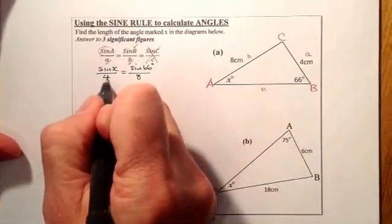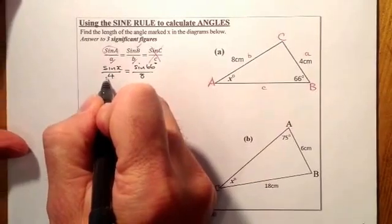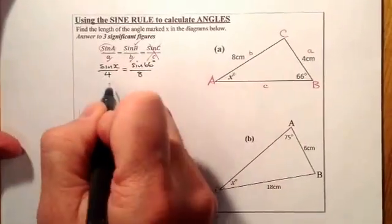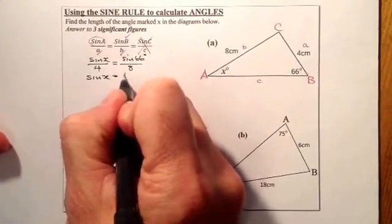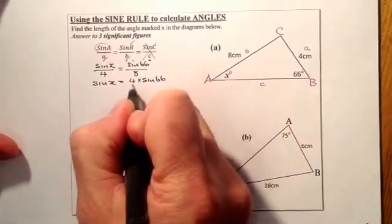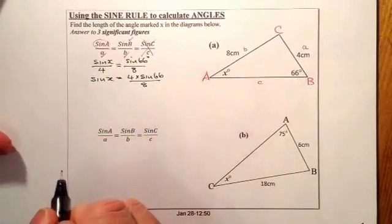From there, I've got 4 on the denominator on this side. If I multiply over this side, I can take it over there and that'll leave me with sine x on its own. So that's going to be 4 times sine 66 all over 8.